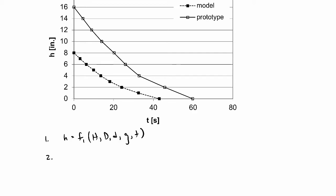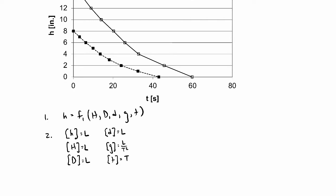Step two is to write out the basic dimensions for each parameter. The height h is just a length; initial height H is also a length; container diameter D is a length; hole diameter d is a length; gravitational acceleration g is length over time squared; and time t is just time. So we only need two basic dimensions to describe everything here — just length and time.